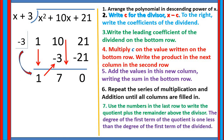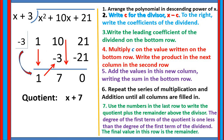Next, use the numbers in the last row to write the quotient plus the remainder above the divisor. The degree of the first term of the quotient is 1 less than the degree of the first term of the dividend. Since the degree of our dividend is 2, the quotient is x plus 7. The final value in the row is the remainder, so the remainder is 0.